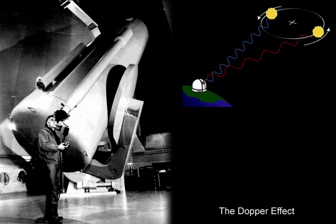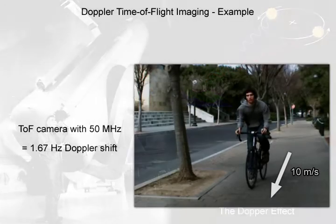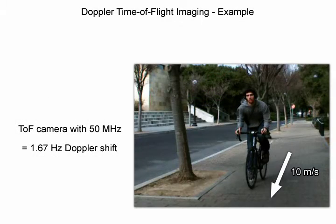The Doppler effect is a well-known phenomenon commonly used to estimate the velocity of astronomical objects or the expansion rate of the universe. In these applications, a shift in the wavelength spectrum of the measured light is observed. In Doppler time-of-flight imaging, on the other hand, the temporal modulation frequency is shifted by the same effect.